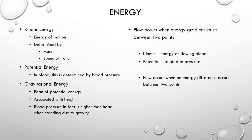There are several types of energy to consider with hemodynamics. Kinetic energy is the energy of the blood in motion. Potential energy in blood is what we call blood pressure. Gravitational energy is a form of energy due to the height of the blood above or below the heart. Flow occurs any time an energy gradient exists between two points, due to either kinetic or potential energy — generally in the body, we see it as potential energy with pressure.